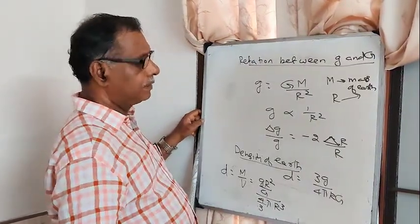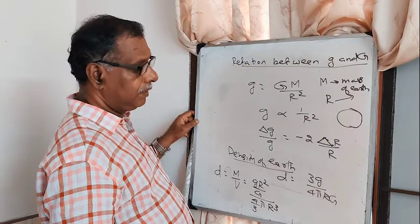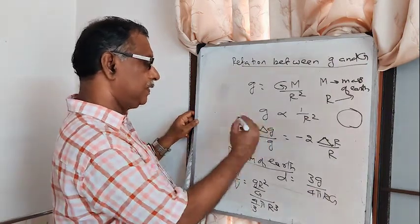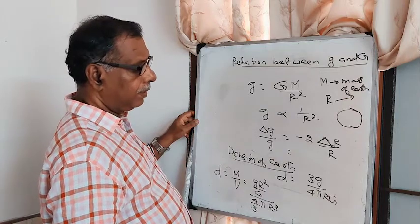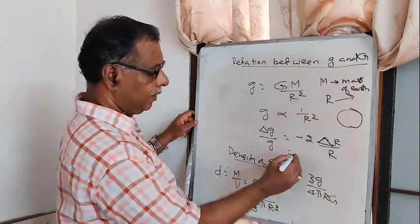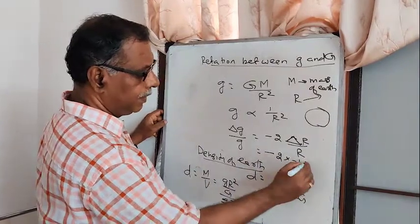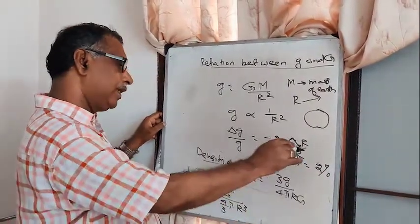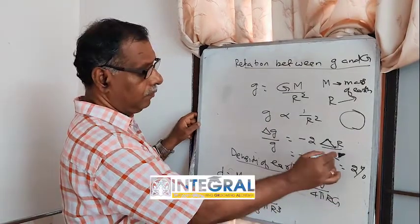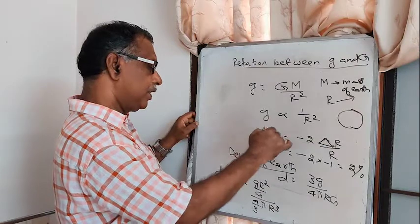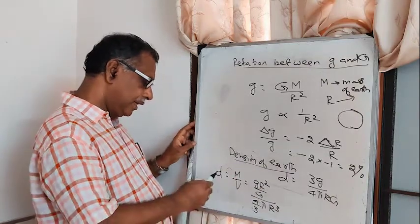For example, suppose the radius of the earth shrinks by 1%. Using Δg/g = −2·ΔR/R, we get Δg/g = −2 × (−1) = 2%. So when the radius of the earth decreases by 1%, the acceleration due to gravity increases by 2%.